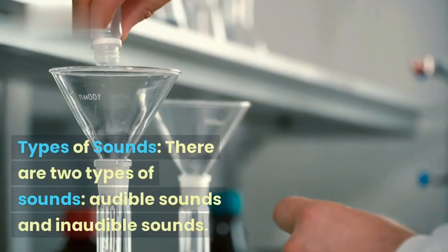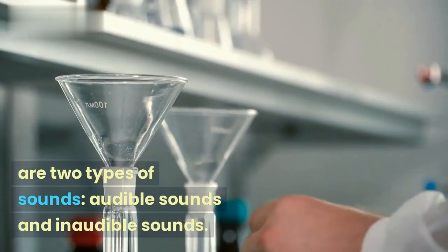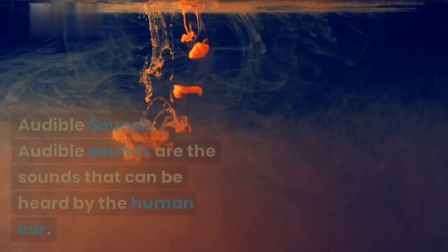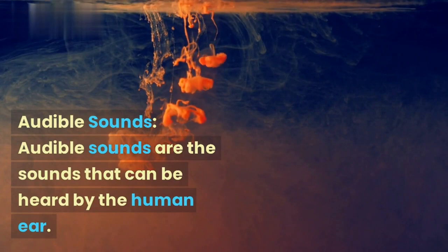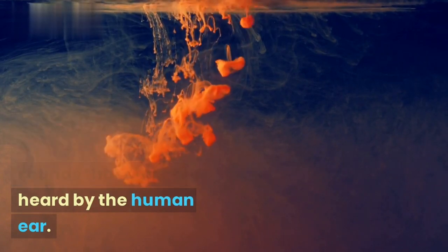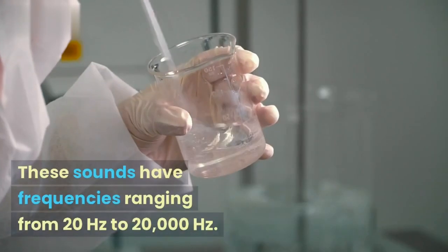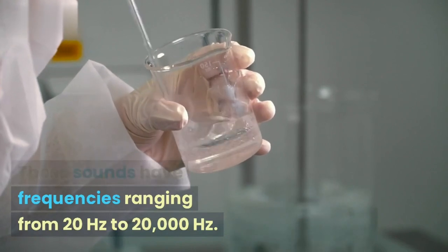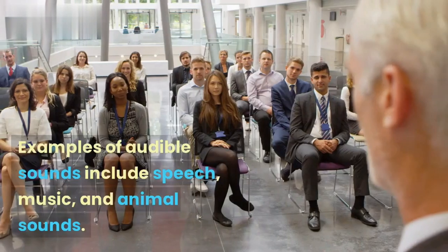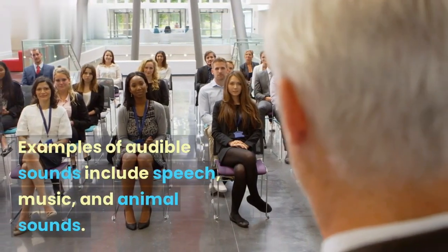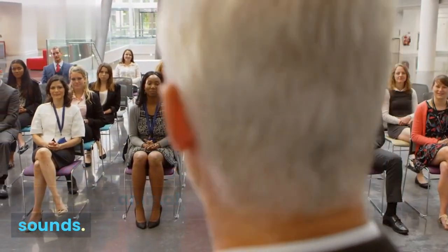Types of sounds. There are two types of sounds. Audible sounds. Audible sounds are the sounds that can be heard by the human ear. These sounds have frequencies ranging from 20 hertz to 20,000 hertz. Examples of audible sounds include speech, music, and animal sounds.